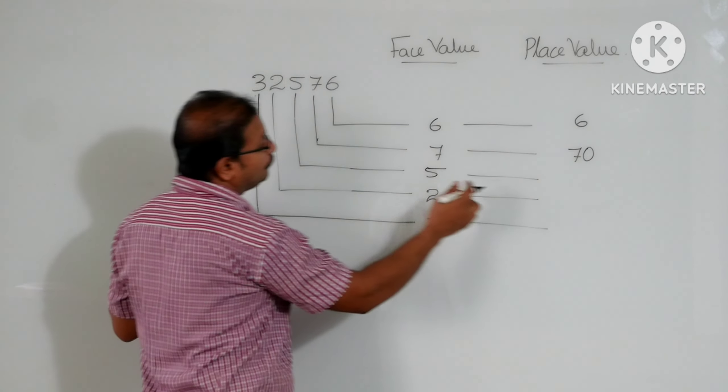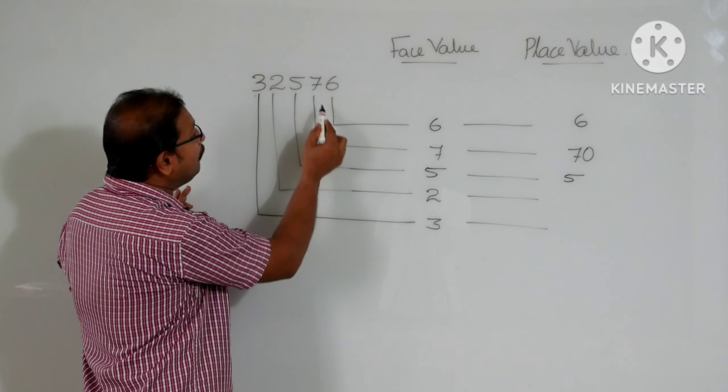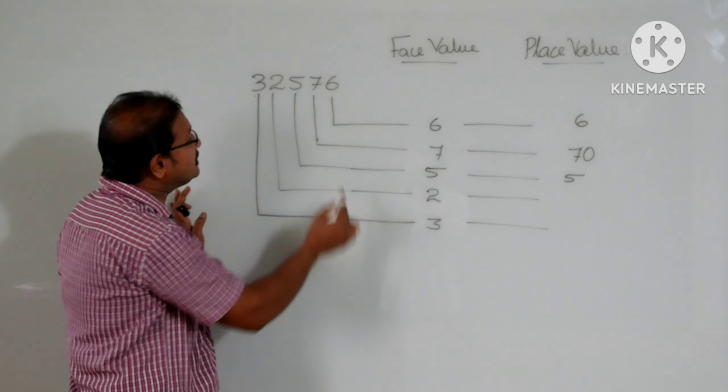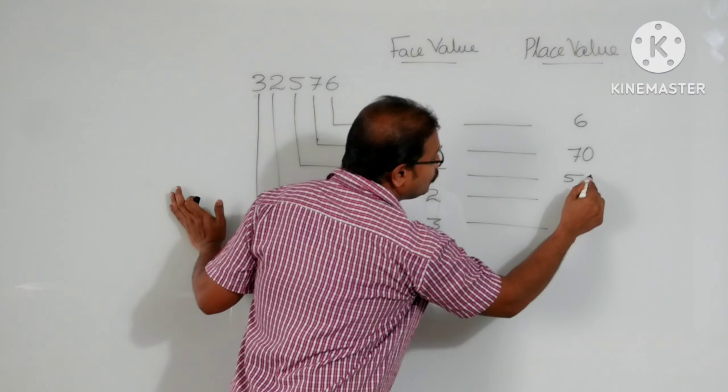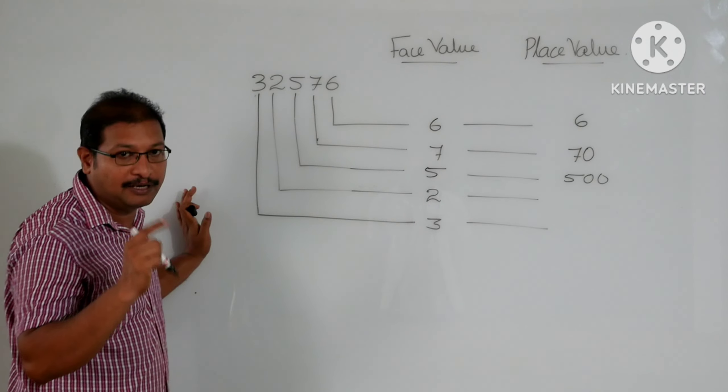Now the next one, 5. First we will write 5. After that, we know that after 5, two digits are there. That means 1, 2. So 1, 2, two 0's will keep. That means it becomes 500.